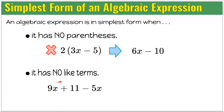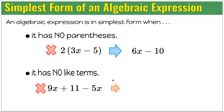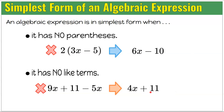The other thing you want to check for is that the expression has no like terms. Here we have an algebraic expression that is not in simplest form because it has two variable terms that are like terms. In order to put it in simplest form, we combine or add the variable terms. Now it has one variable term and a constant.